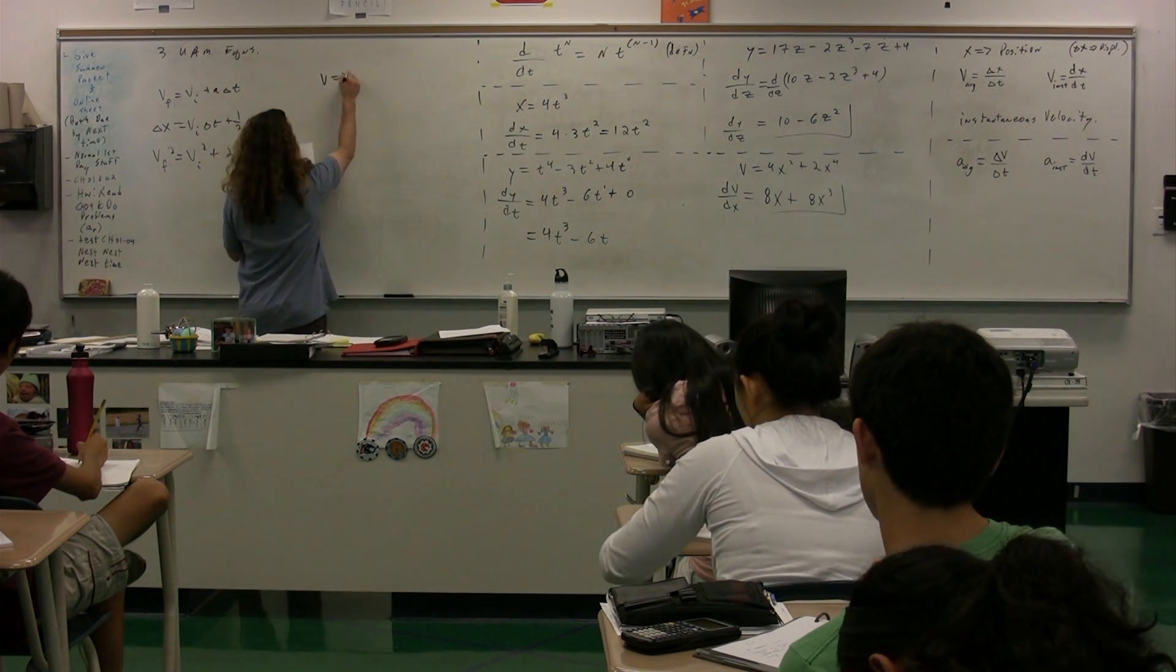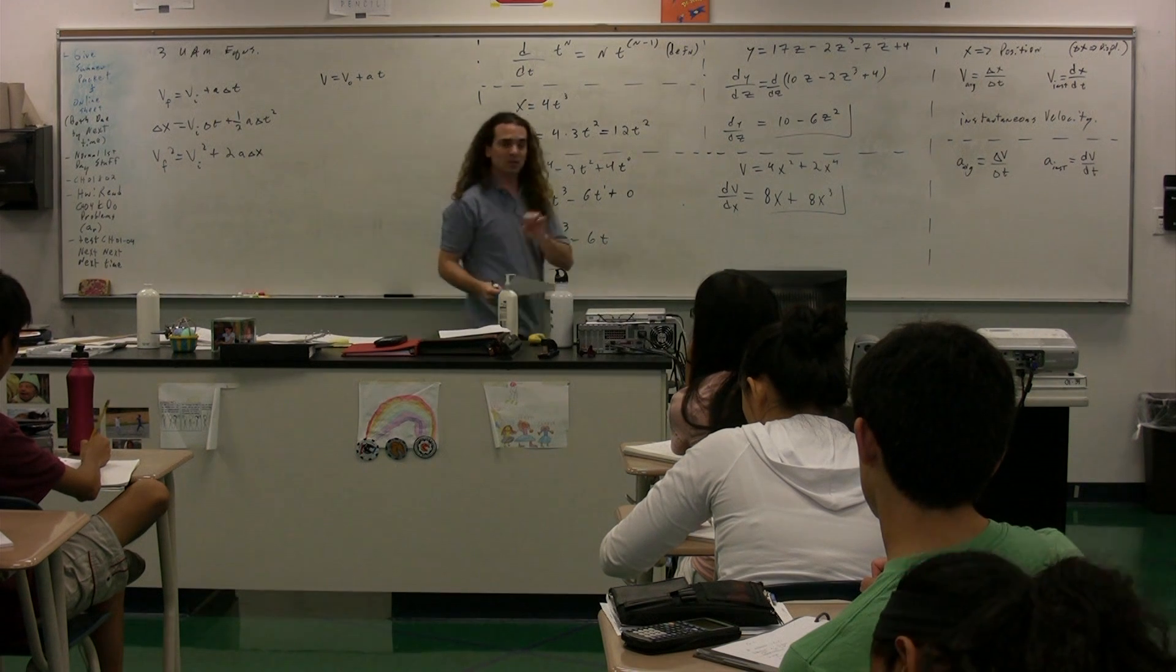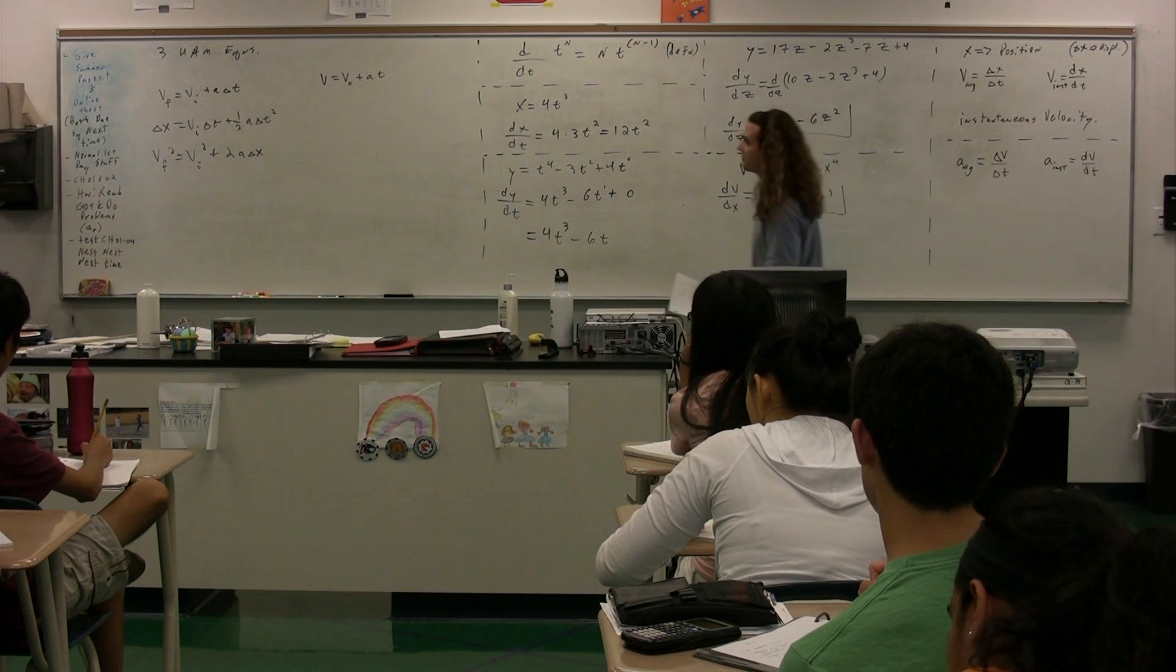They have velocity equals v-naught plus a times t. That's the equation that they have on the equation sheet, which is not exactly the same. So let's talk about some of the differences.